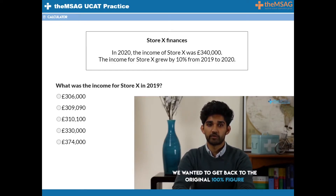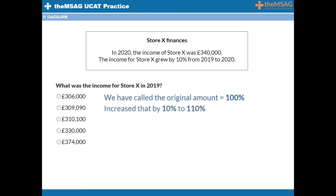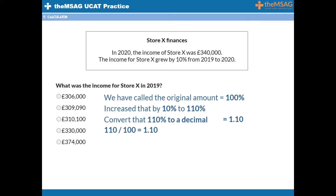We wanted to get back the original 100% figure. So how do we solve this problem? We have called the original amount 100% and increased that by 10% to 110%. You must convert that 110% to a decimal. What is 110% as a decimal? 1.10. If you weren't sure, you divide a percentage by 100 to convert it into a decimal. And what do we do with that decimal? Divide your new number by it to find the original amount.